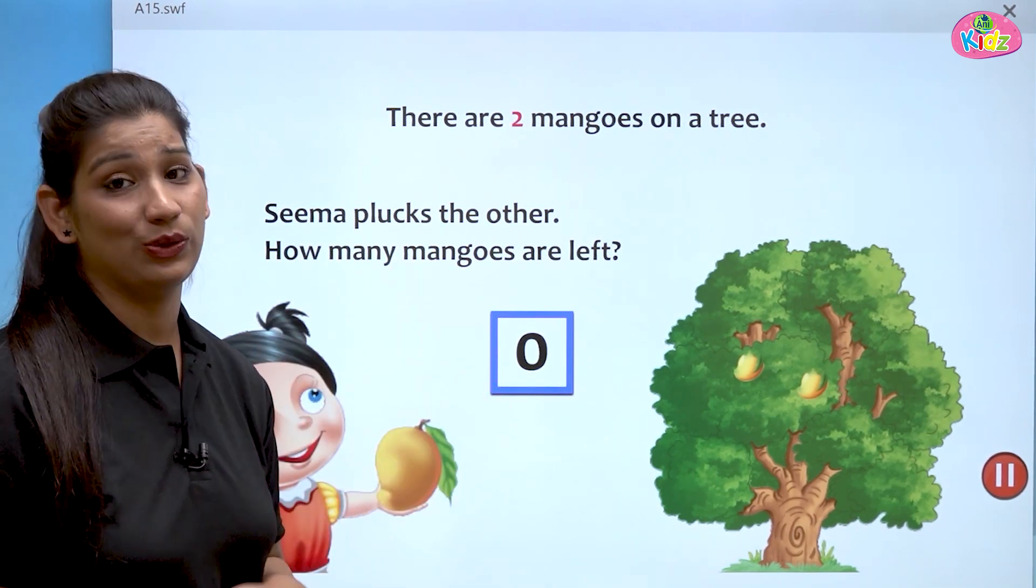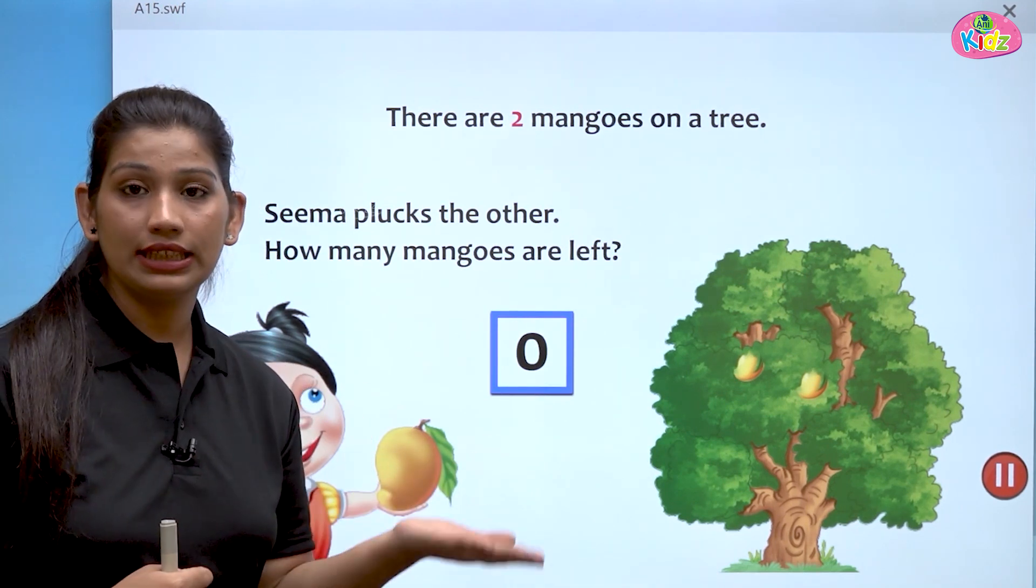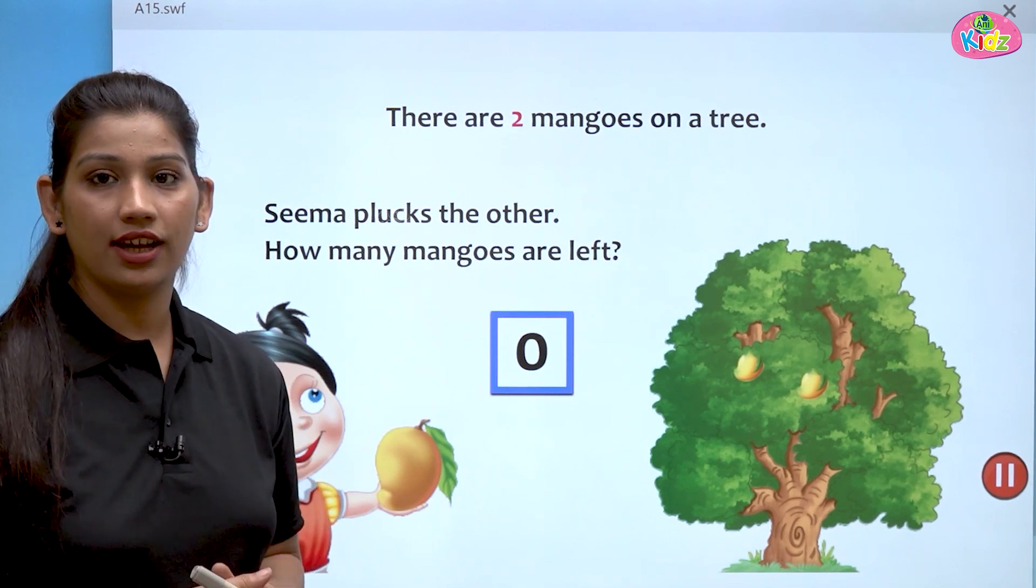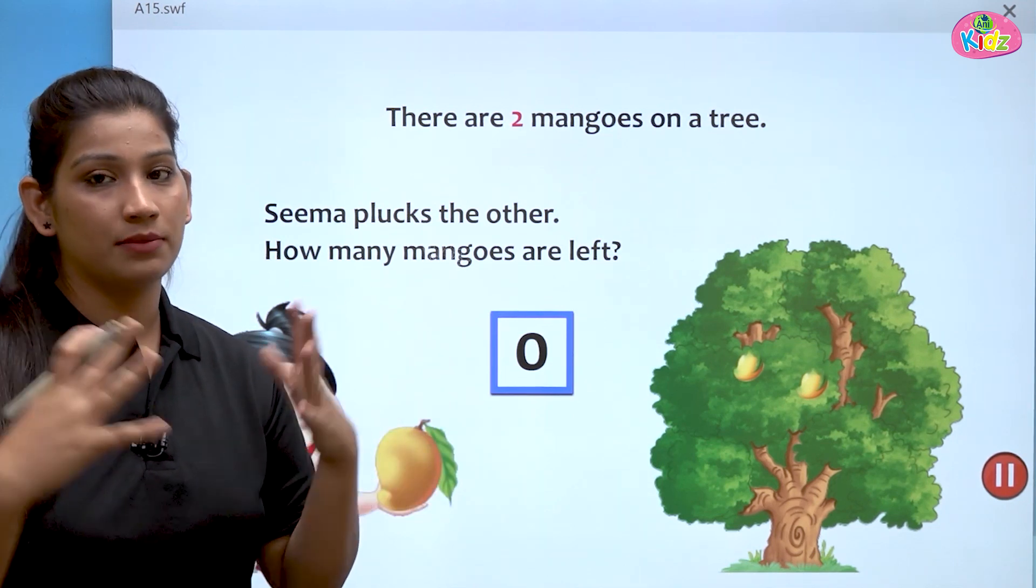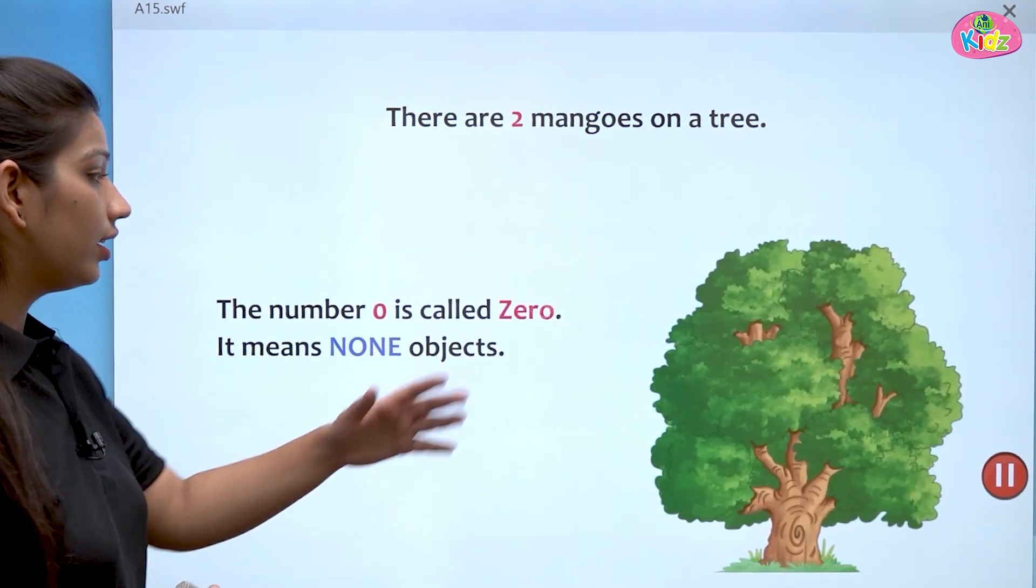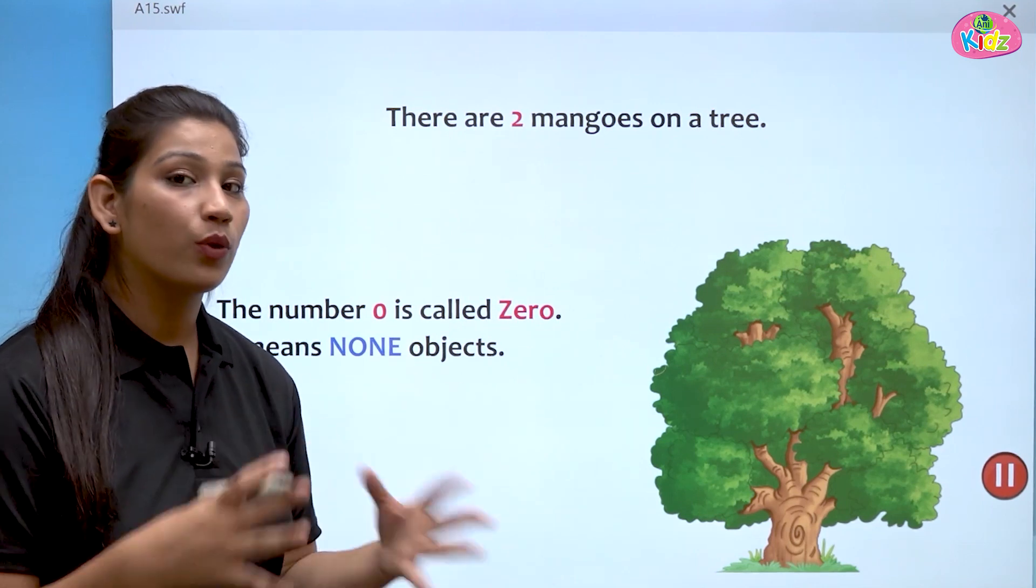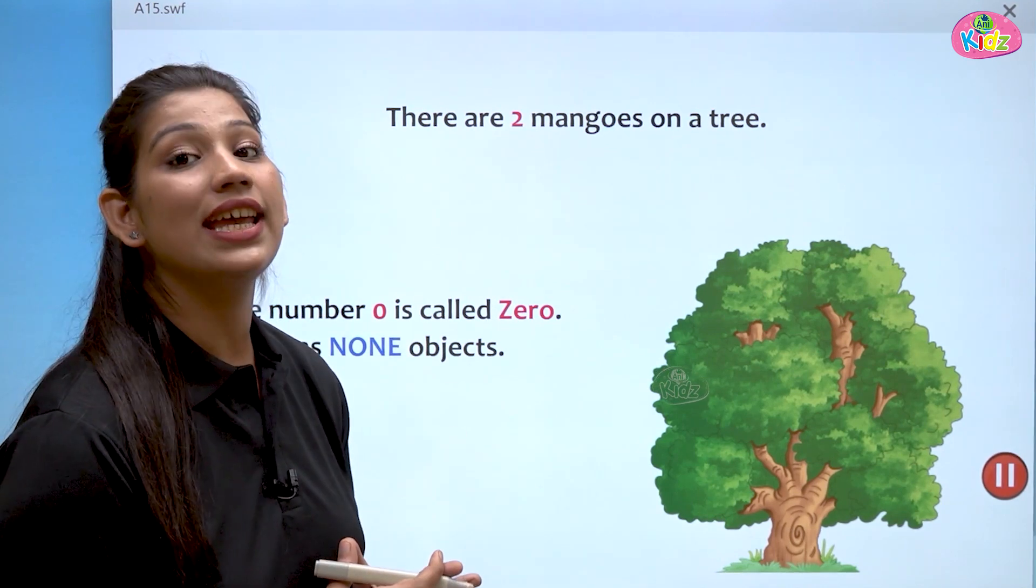This is number zero. Zero mangoes rehi ga hai. Two mangoes thay pehle. Ankit ne le liya, then Seema ne le liya. Two ke two mangoes khatm hoon ga hai. Now, there are zero mangoes. You can see the tree. The number is zero. Ab koi mangos nahi hai. Jab koi mangos nahi hai, so we will say zero.